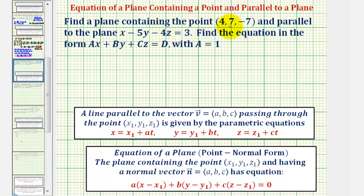We want to find a plane containing the point (4, 7, -7) and parallel to the plane x - 5y - 4z = 3. We want to find the equation in standard form with A = 1.